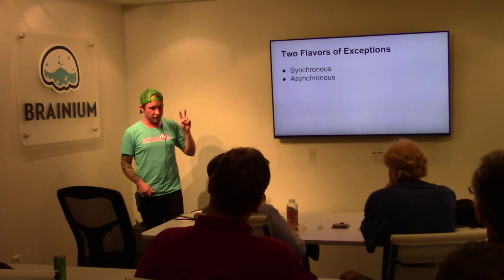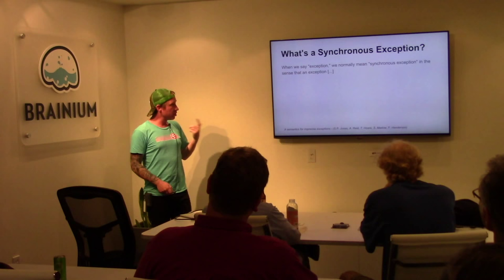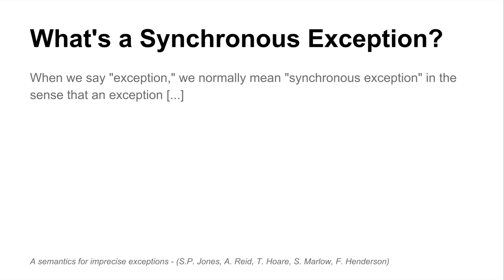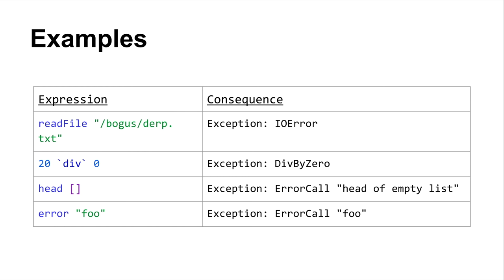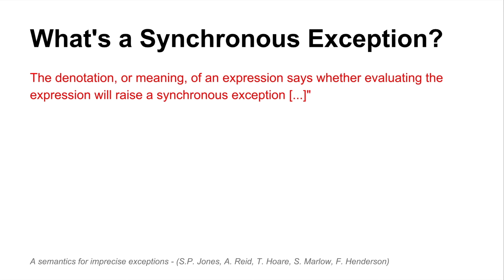Two flavors of exceptions: synchronous and asynchronous. Synchronous exceptions are what you're probably used to in other languages — you write a try-catch block, evaluate some statements, and an exception pops out. It's a way of signaling out-of-band failure. Examples: reading a file with a bogus path gives an IOException; 20 divided by 0 gives DivByZero; head on an empty list; et cetera.